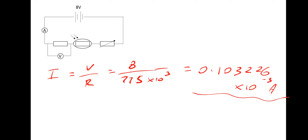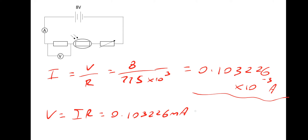This leads straight into part three: calculate the voltmeter reading for the above conditions. It's simply Ohm's law again, V equals IR. The current going through the fixed resistor is 0.103226 × 10⁻³ amps, multiplied by its resistance of 7,500 ohms, which gives a voltage of 0.77 volts.